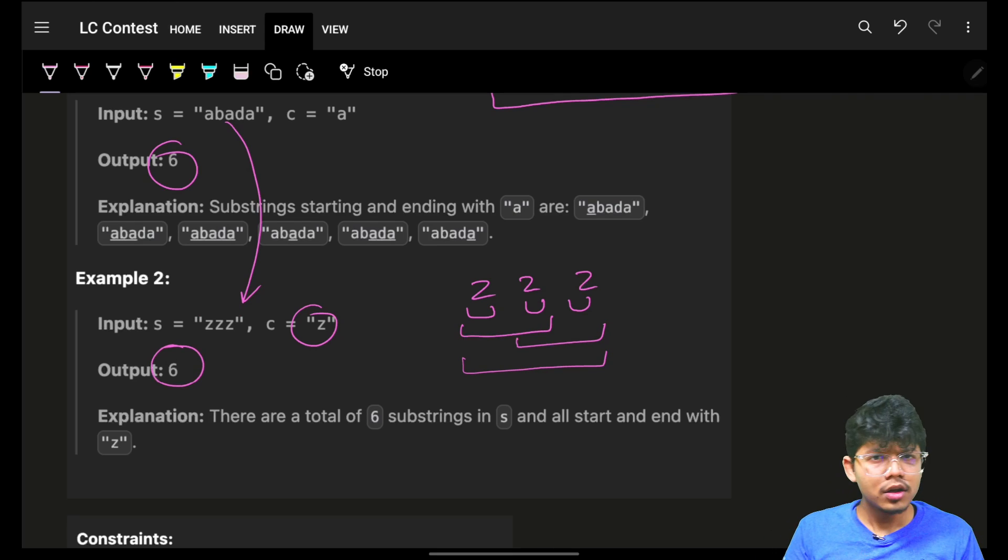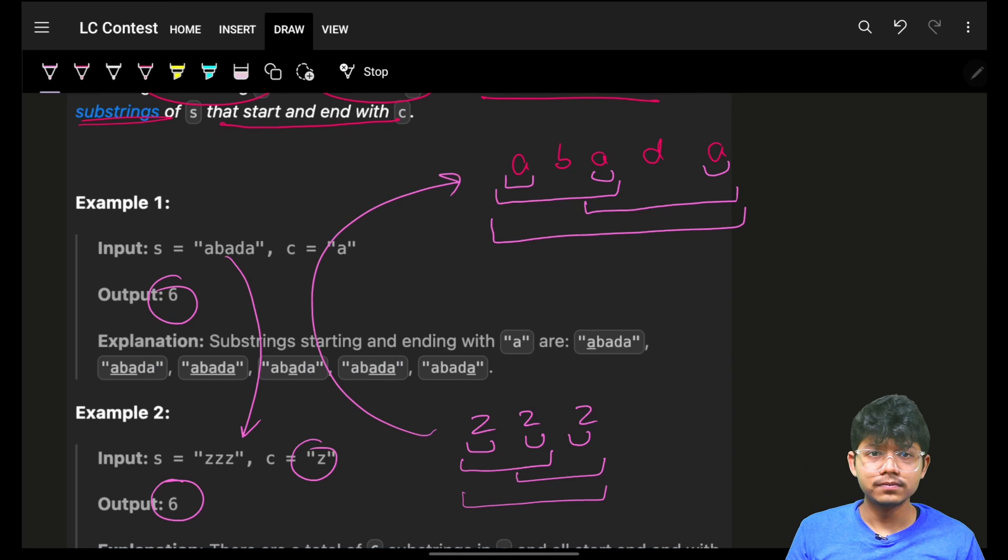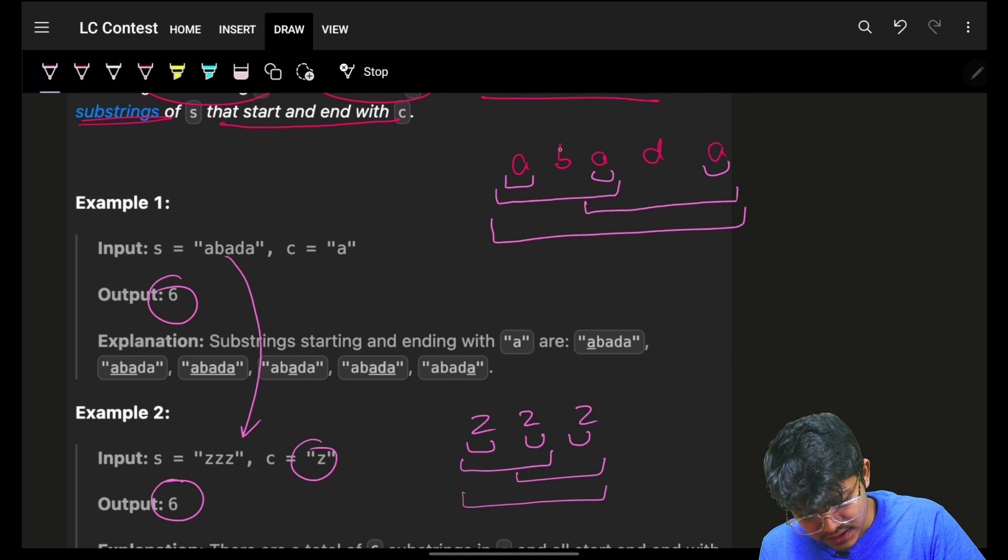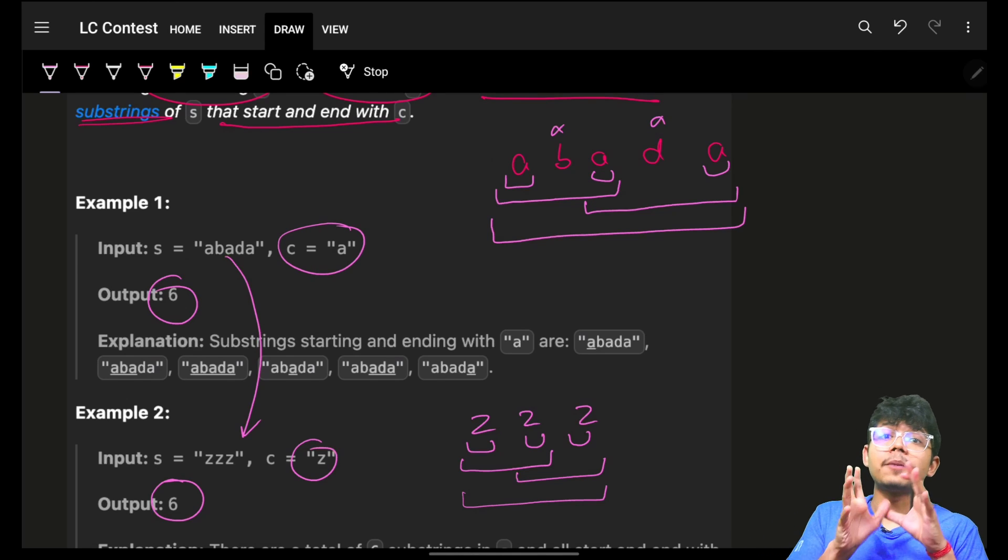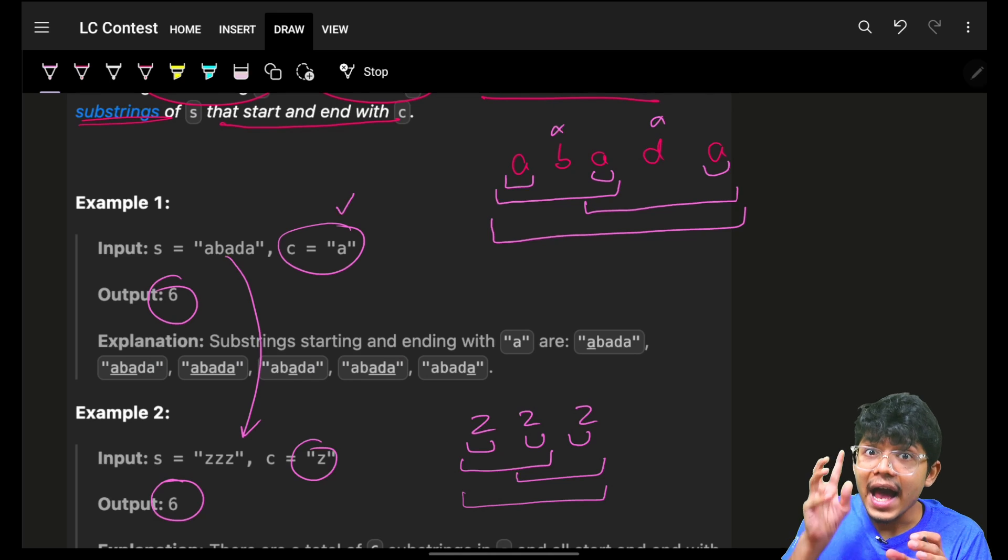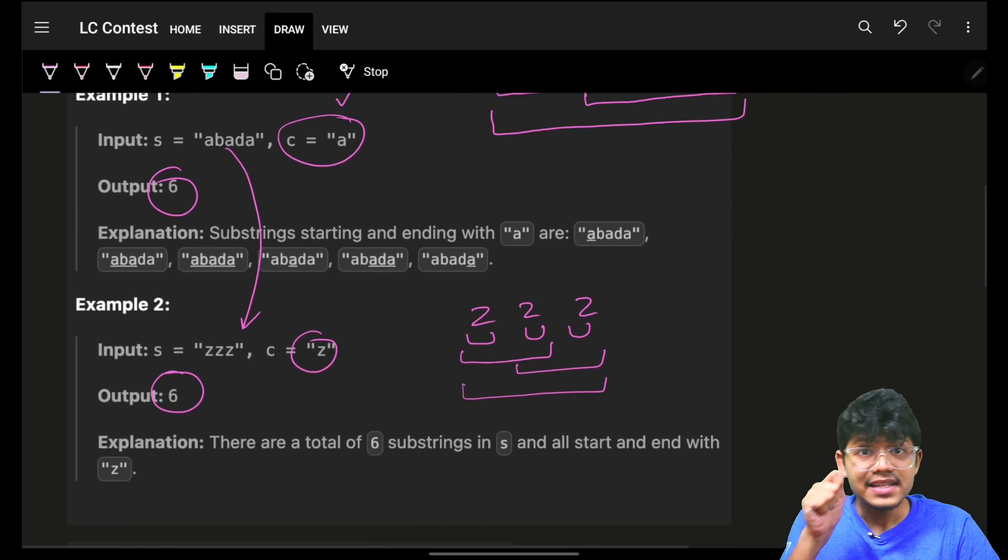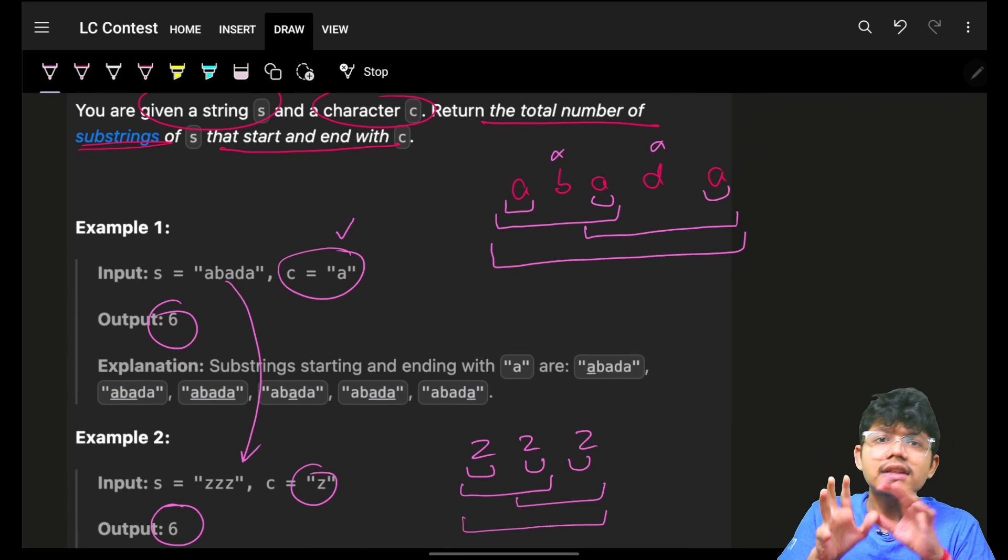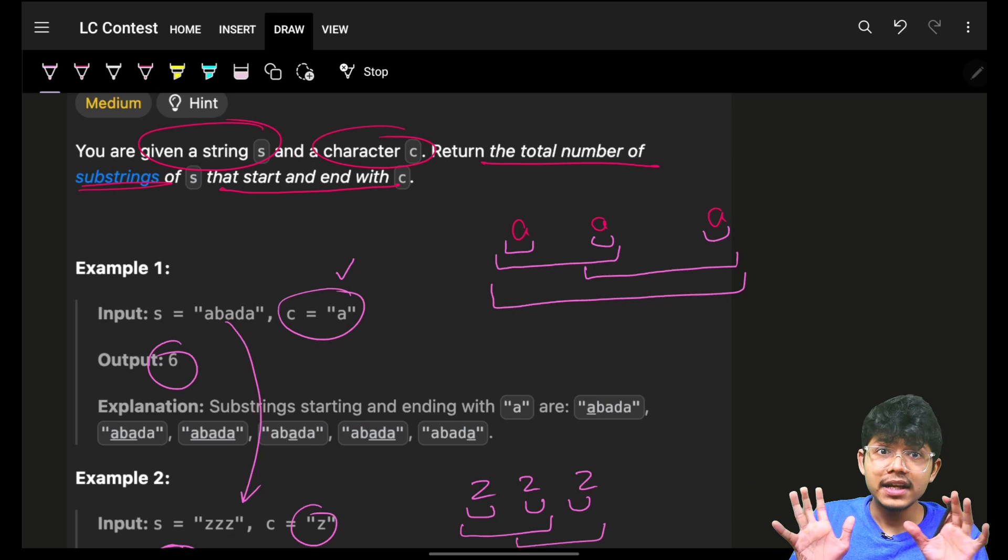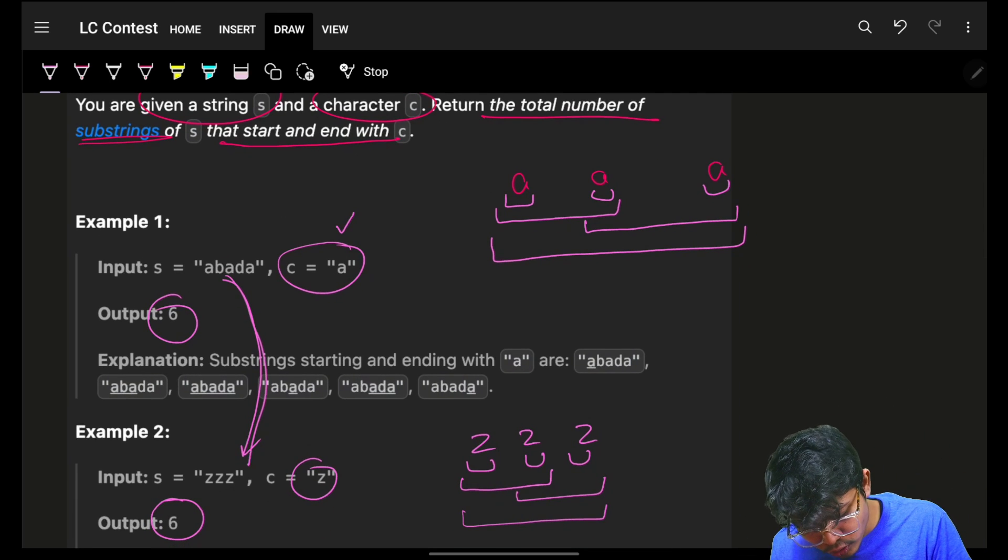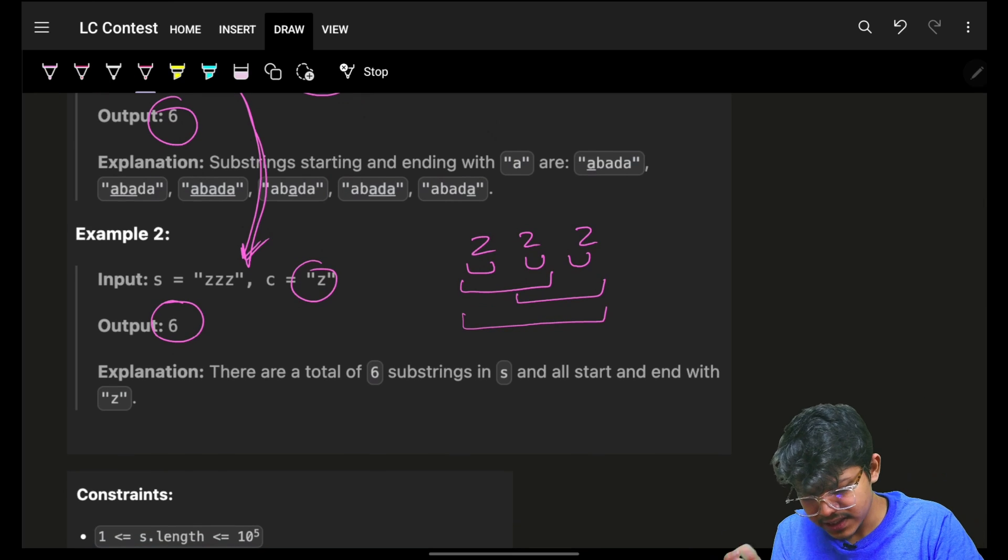Can you just think of what's the difference between these two? Nothing, because these elements never matter. These elements never matter. I just want how many number of substrings are there with a as starting and ending. So I am never concerned about what is in between them. I'm only concerned about starting and ending. That's it. So I just need the characters itself. So even if I remove them, they will never matter for me, never ever.